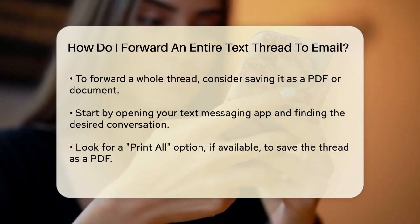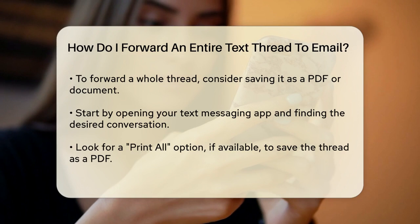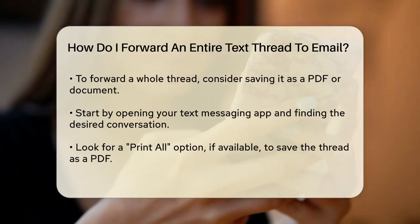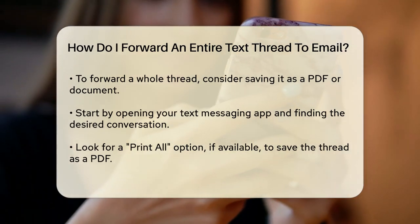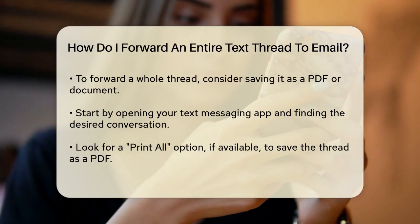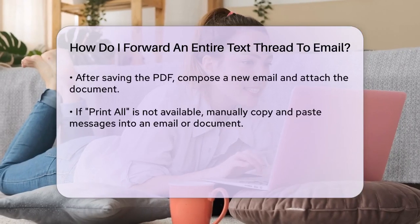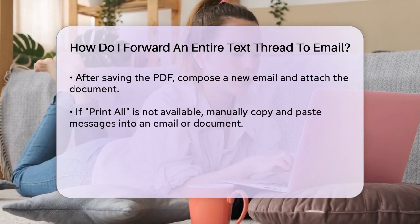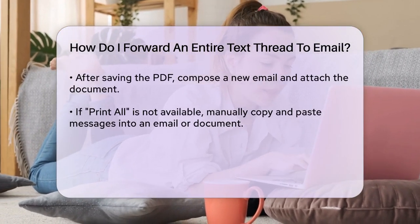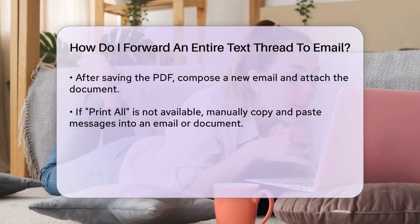So how can you work around this? Here's a practical solution. If you need to forward the entire text thread, one method is to save the conversation as a PDF or a document. Open your text messaging app and locate the conversation you want to forward. Since there is no direct forward-all feature, you can use the print-all option if available. This will allow you to save the entire thread as a PDF.